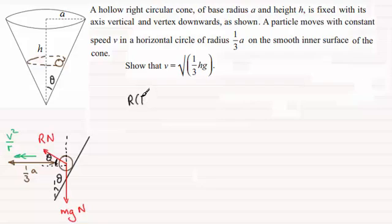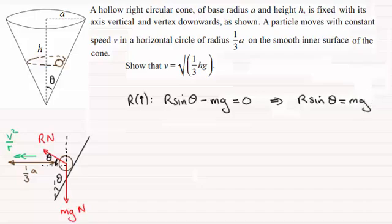So when it comes to considering resolving, let's resolve vertically upwards first of all. Then what we've got is the component of r acting vertically is going to be r sine theta. So you've got r sine theta, then you've got the weight acting downwards, so that's minus mg. And there's no acceleration in the vertical sense. So this is going to be equal to 0. Rearranging this we can see from here that it follows that r sine theta must equal mg. And I'll call that equation 1.